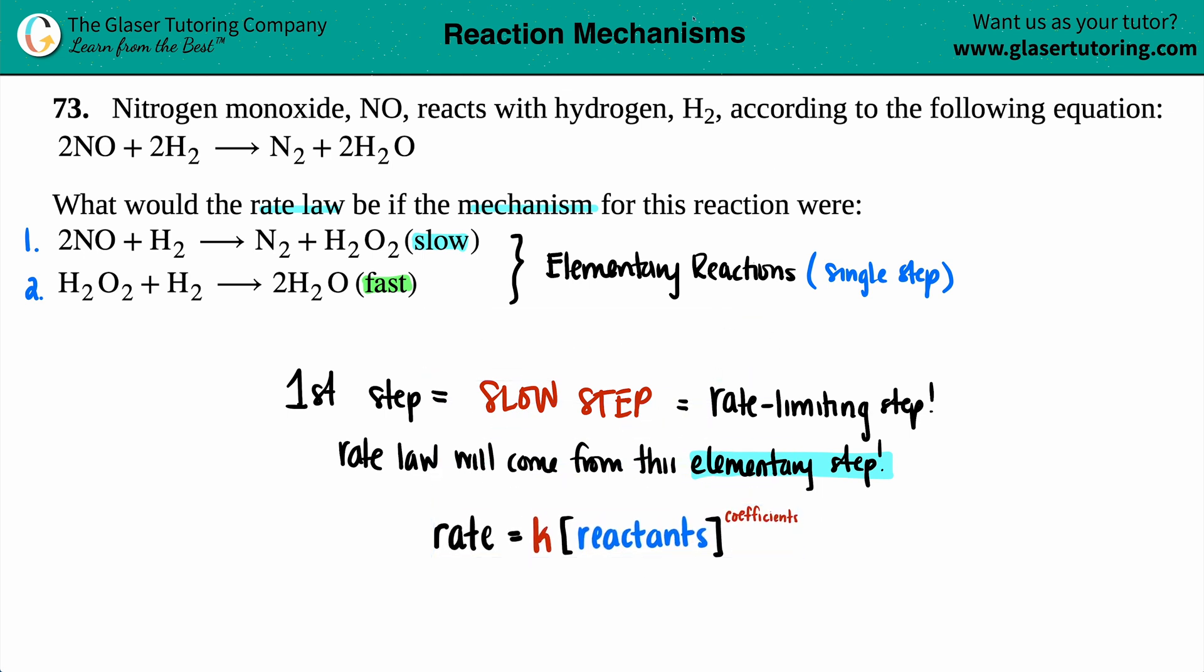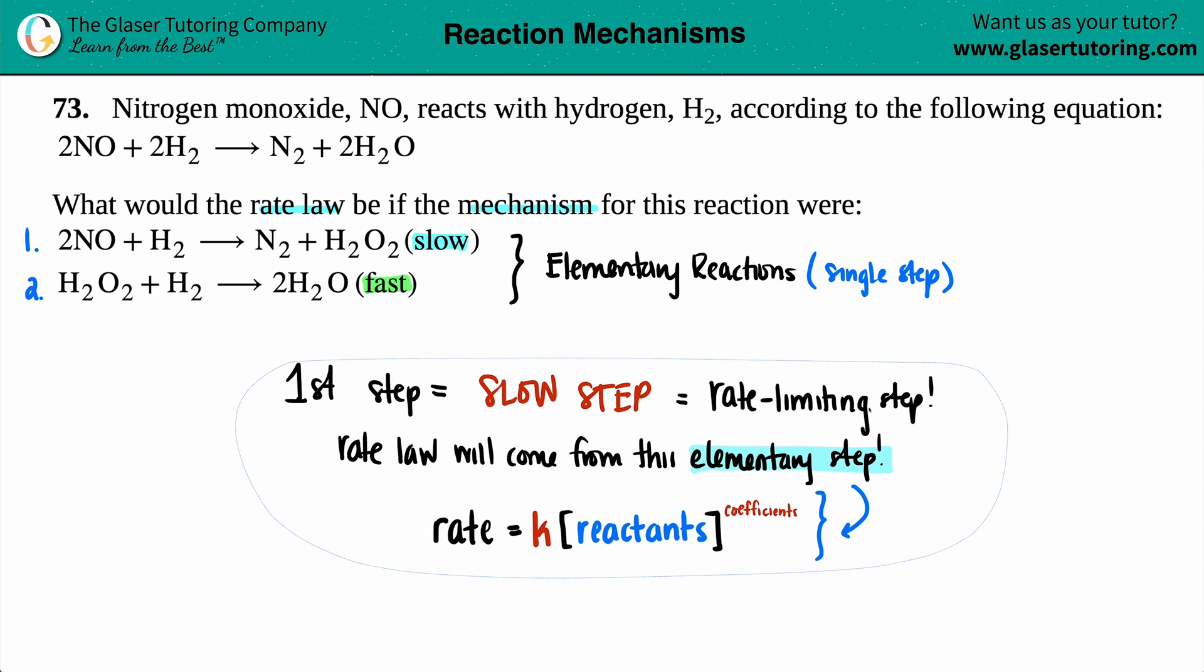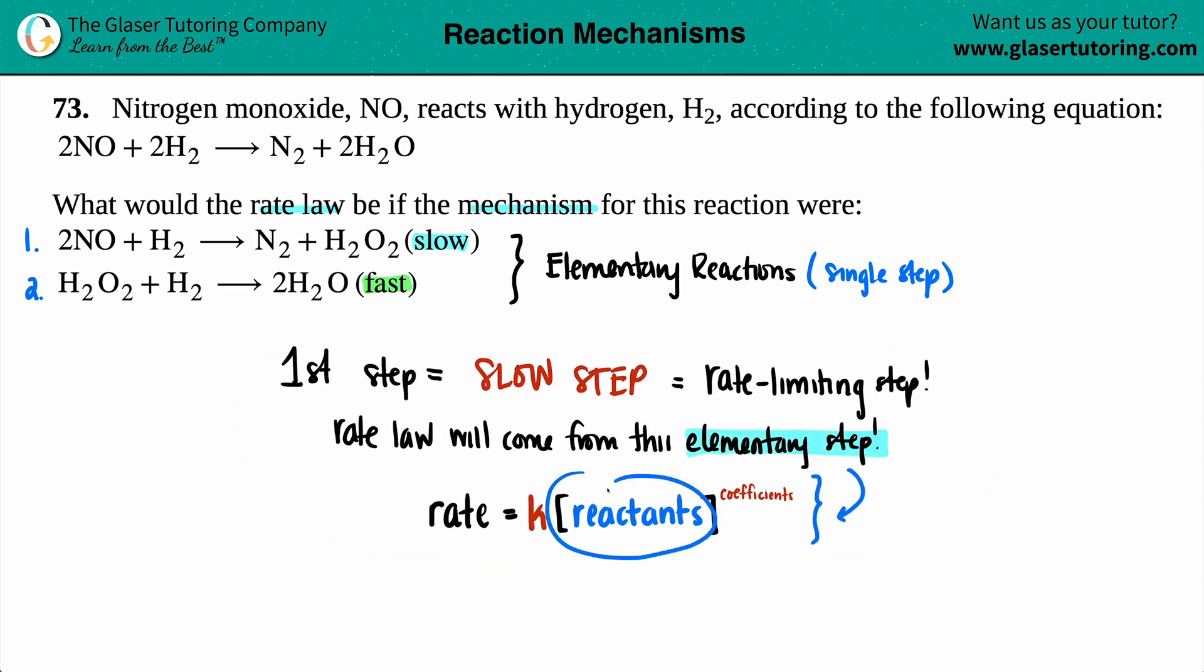So now if we're talking about rate laws from elementary steps or elementary reactions, they're very similar to the rate law for what we know, but it's just a little bit different. The rate law for an elementary step is this. And what we're going to do is we're just going to say, hey, we can use this if we know that it's an elementary step. Rate equals K. So rate equals the rate constant. That's nothing different times the concentration of the reactants. That's nothing different.